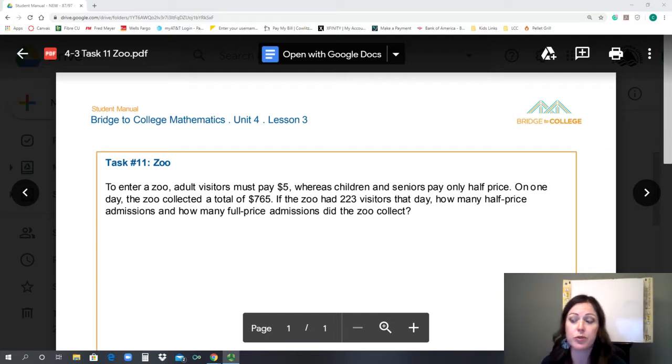So our situation is: to enter a zoo, adult visitors must pay $5, whereas children and seniors pay only half price. On one day, the zoo collected a total of $765. If the zoo had 223 visitors that day, how many half-price admissions and how many full-price admissions did the zoo collect? So the question is asking for how many half-price and how many full-price entries did they have. Those are our two unknowns.